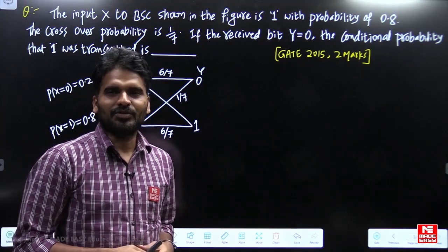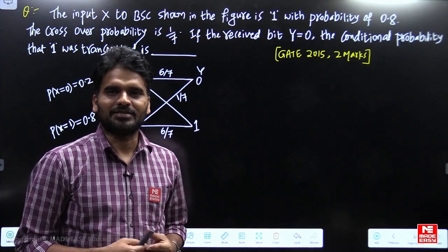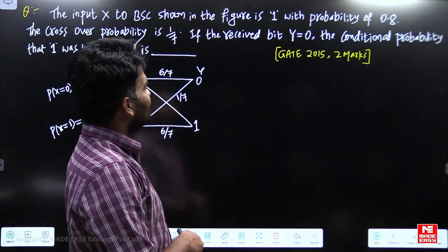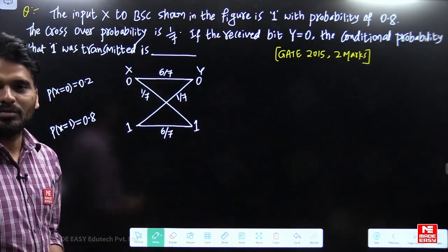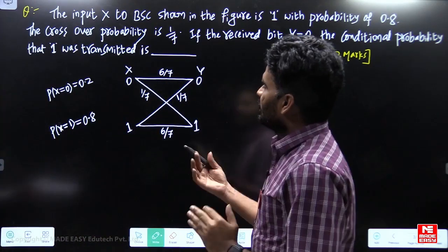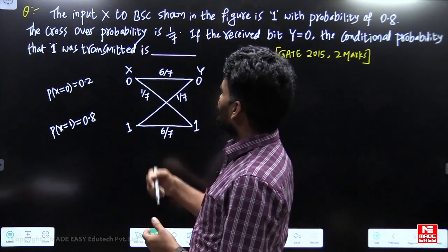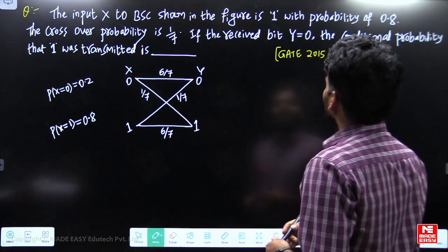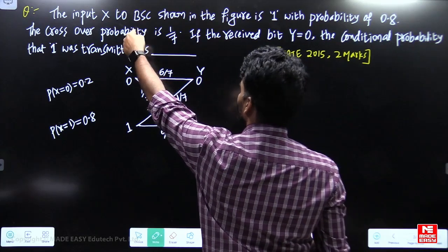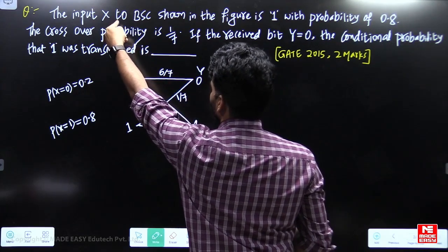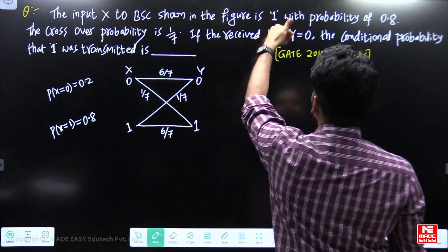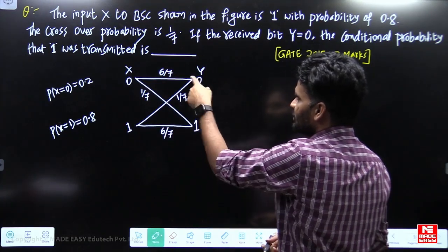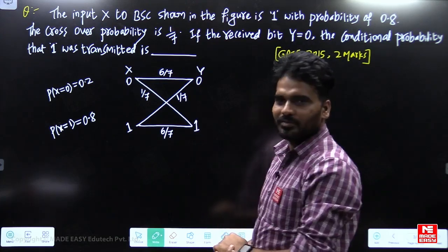Hello students. Here I am going to discuss one of the important communication systems questions from GATE 2015 for two marks. This question is about finding the conditional probability. The input x to a Binary Symmetric Channel (BSC) is shown in the figure, and x equals one with probability 0.8.